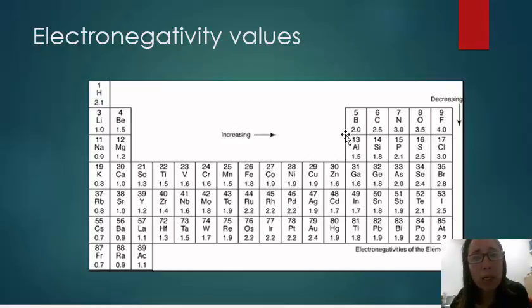And if you remember the size trends of atoms, as we go from left to right across a period, atoms get smaller. And so the ability of that nucleus to pull electrons toward itself is going to increase, get stronger, as the atom gets smaller. So as an atom gets smaller and its nuclear charge increases, an atom is better at pulling bonding electrons toward itself. Now notice that the noble gases are not included because typically they don't form bonds with other atoms.